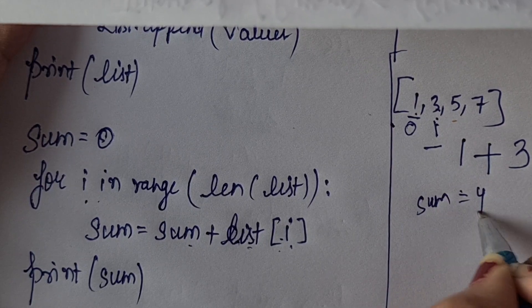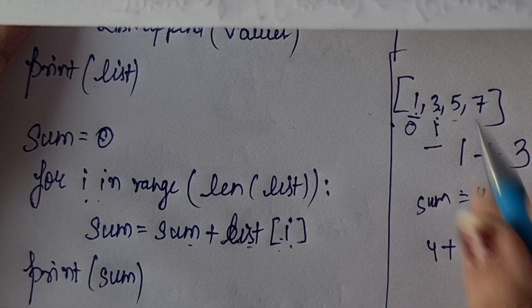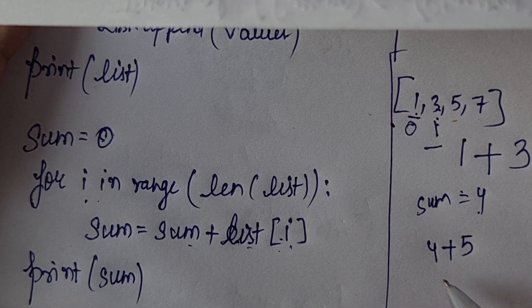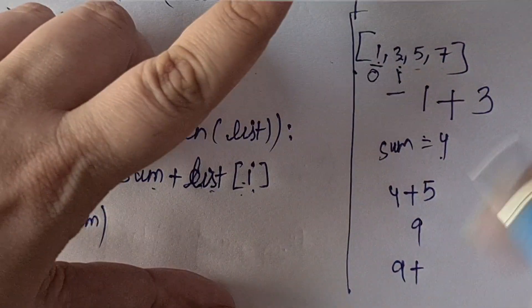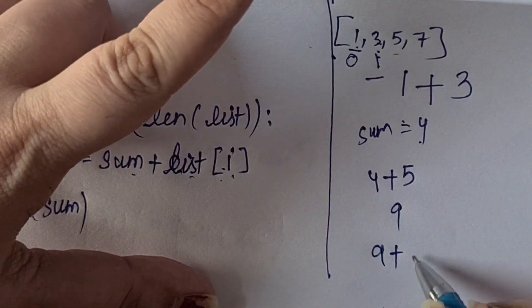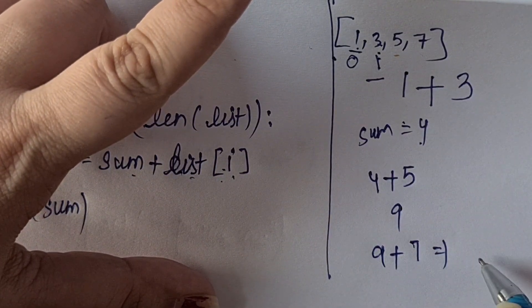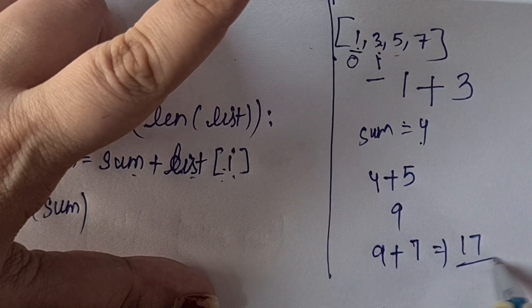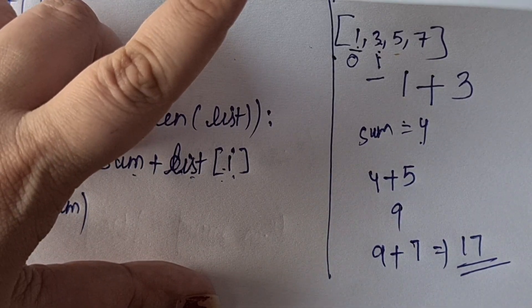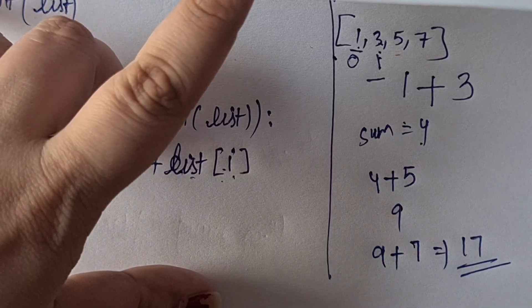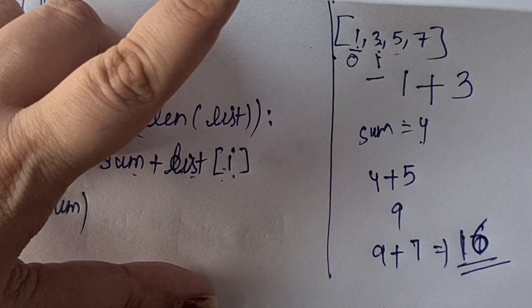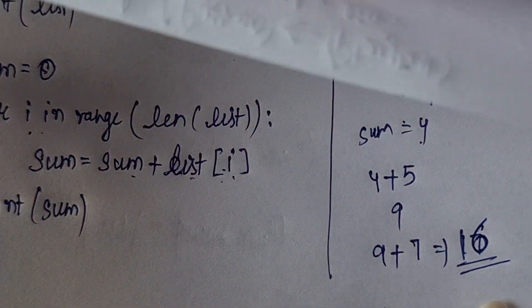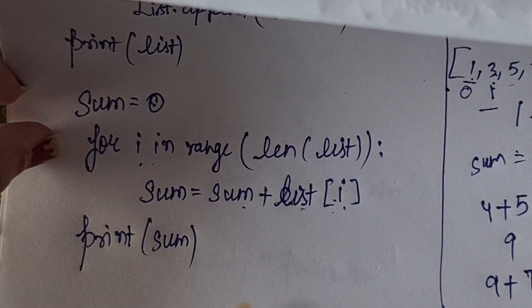Then 4 plus the next step is 5. So 4 plus 5 is 9. Then 9 will be the updated value. Last is 7, list of i. So 9 plus 7 is 16. This is the sum value. Last loop completes, after completing you will print it.